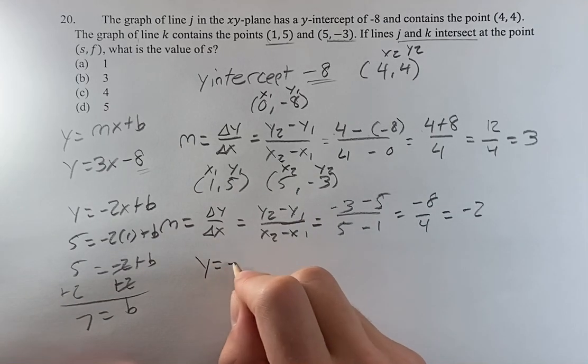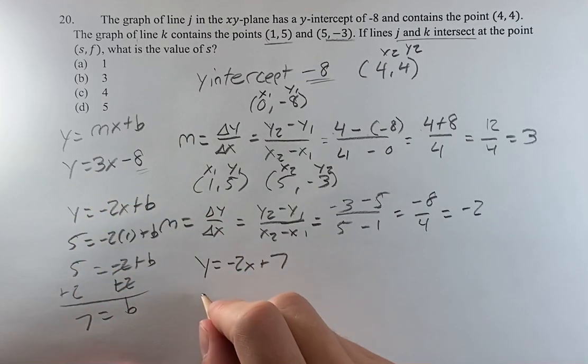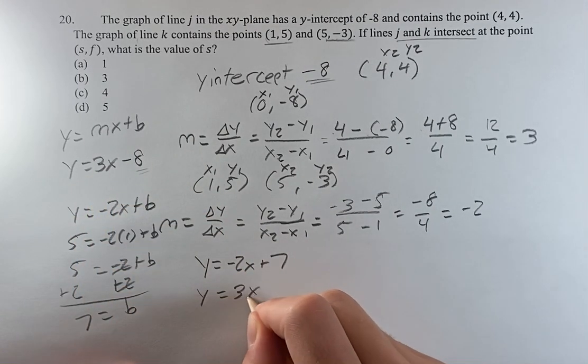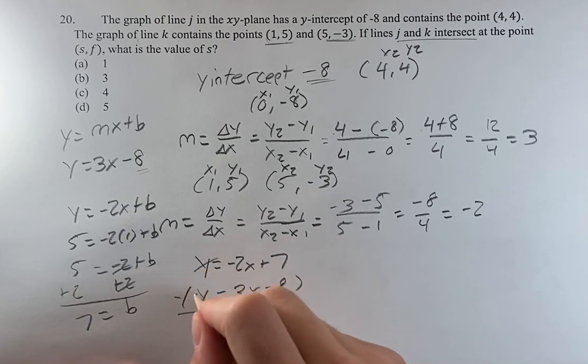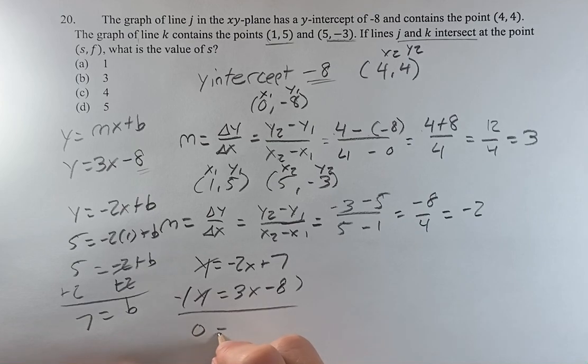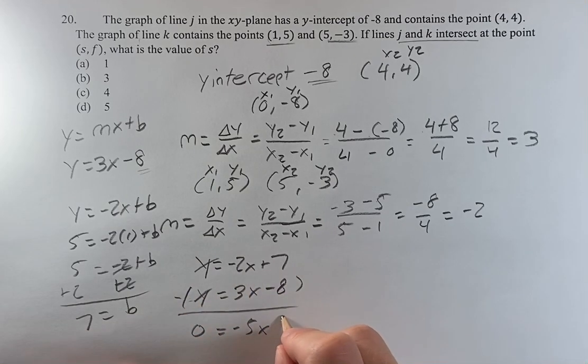So, we have y = -2x + 7. Here, we have y = 3x - 8. And we can use elimination to get rid of y. 0 = -2x - 3x is -5x + 7 + 8, because it's minus negative 8, it's equal to plus 15.